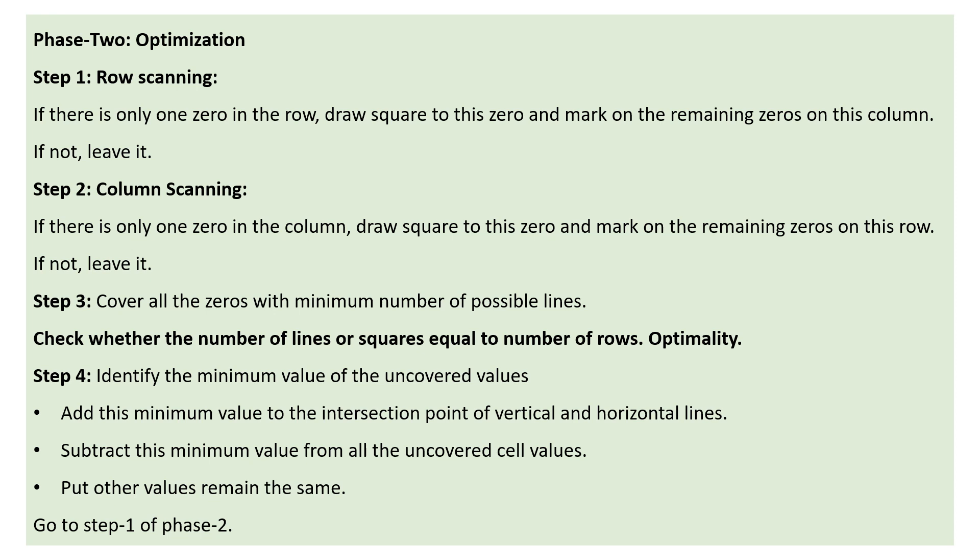After phase one — row and column reduction — the next phase is phase two: optimization. In phase two there are four steps. Step one is row scanning. When we look at each row, if there is only one zero in a single row, draw a square around that zero and mark the remaining zeros in that column. If there is no zero or more than one zero, just leave it out.